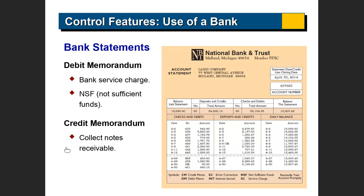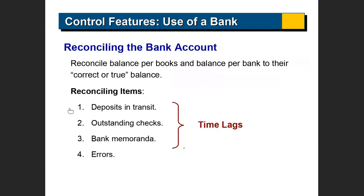If there is any collection on the bank statement that happens automatically — for example, a loan payment deposited into the bank automatically — it is possible that the company has not recorded it. You can record that when you get the bank statement. There are certain things affecting the bank statement that are not affecting the accounting records, so you have to adjust the accounting records for those amounts.